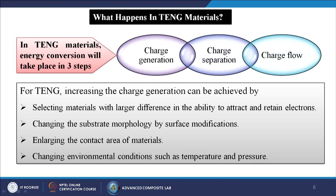What is the actual mechanism behind TENG? In TENG materials, energy conversion takes place in three steps: first is charge generation, then charge separation, and finally charge flow. For TENG, increasing charge generation can be achieved first by selecting materials with larger differences in ability to attract and retain electrons — that means the maximum positive and the maximum negative.